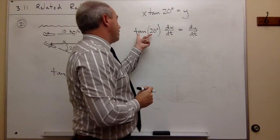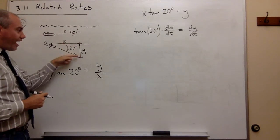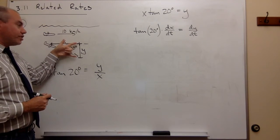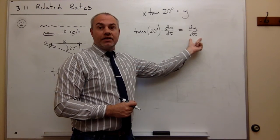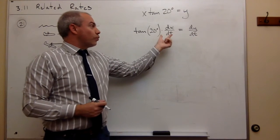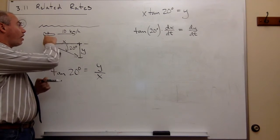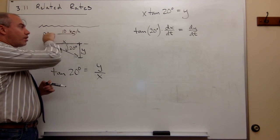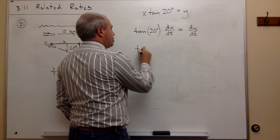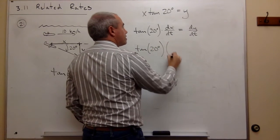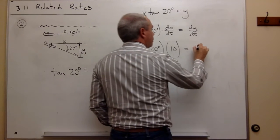I have tangent of 20 degrees times dx/dt equals dy/dt. What am I trying to figure out? How fast is this submarine diving? In other words, what's the change in that distance y over time? I'm trying to figure out what is dy/dt. To figure out dy/dt, all I really need to know is what's dx/dt, the change in this x distance over time. That's what I'm given because it's following the upper sub which is moving along at a constant rate of 10 kilometers an hour. So I just plug in 10 here, and I get tangent of 20 degrees times 10 equals dy/dt, which is what I'm trying to figure out.